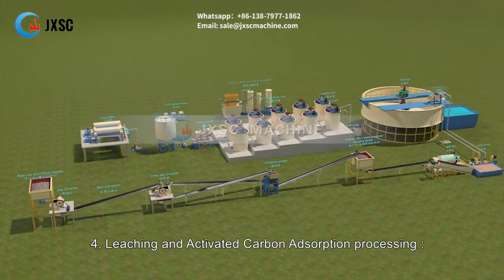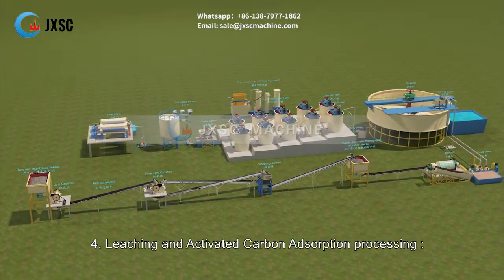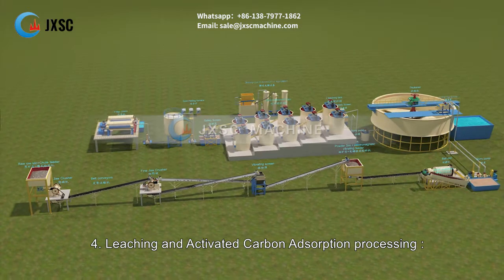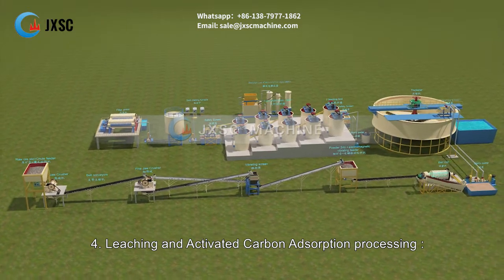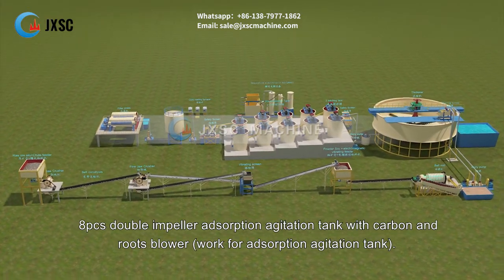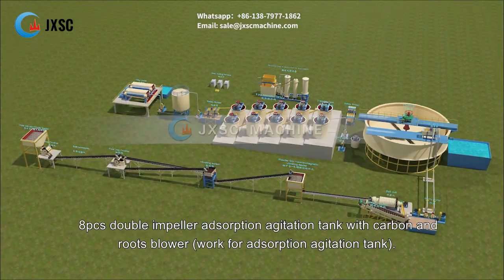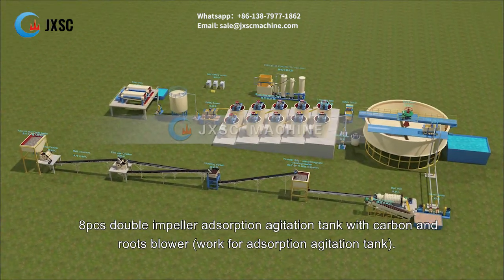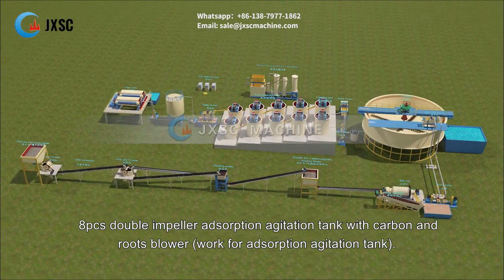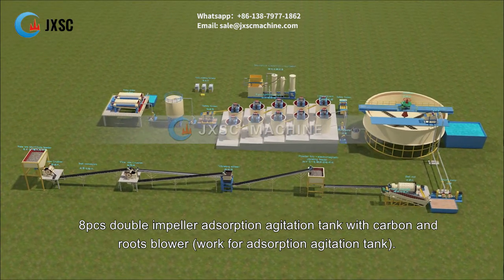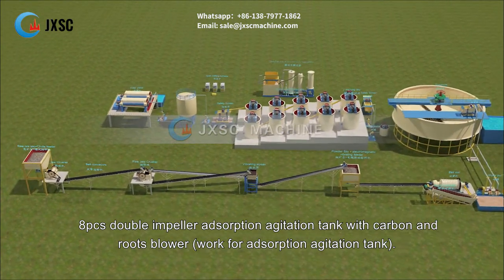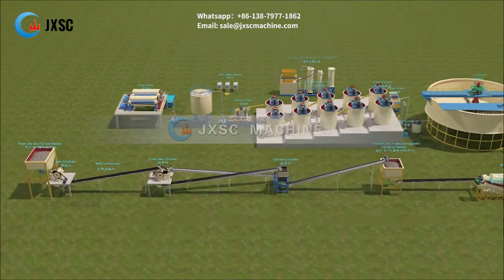4. Leaching and Activated Carbon Adsorption Processing. Eight double-impeller adsorption agitation tanks are used with carbon and a roots blower for adsorption agitation.